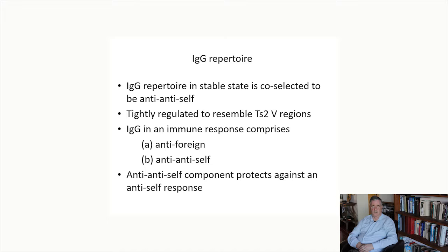It means the IgG repertoire in a stable state is co-selected to be anti-anti-self. It is tightly regulated to resemble TS2 V regions. An IgG immune response will then comprise two aspects: an anti-foreign aspect and an anti-anti-self aspect. The anti-anti-self aspect protects against any possible anti-self response.